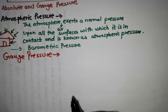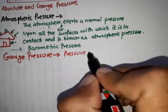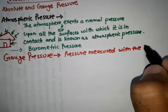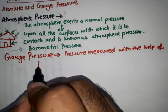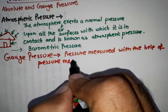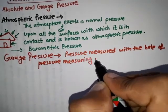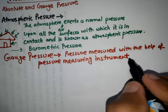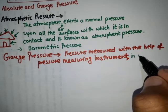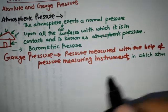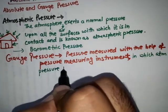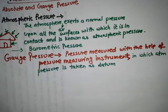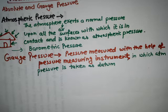Now another term we need to know is gauge pressure. Gauge pressure is the pressure measured with the help of pressure measuring instruments. One important thing here is that atmospheric pressure is taken as datum — meaning atmospheric pressure is taken as zero.